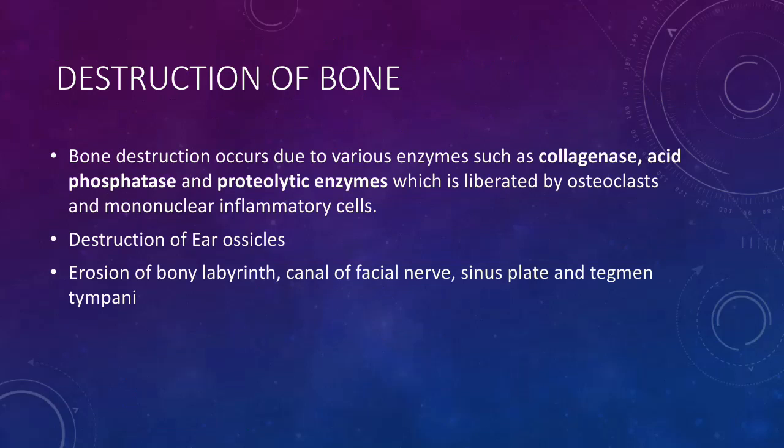Destruction of the bone. Bone destruction occurs due to various enzymes such as collagenase, acid phosphatase, and proteolytic enzymes, which are liberated by osteoclasts and mononuclear inflammatory cells associated with cholesteatoma. There is destruction of the ear ossicles and erosion of the bony labyrinth, canal of the facial nerve, sinus plate, and tegmen tympani.